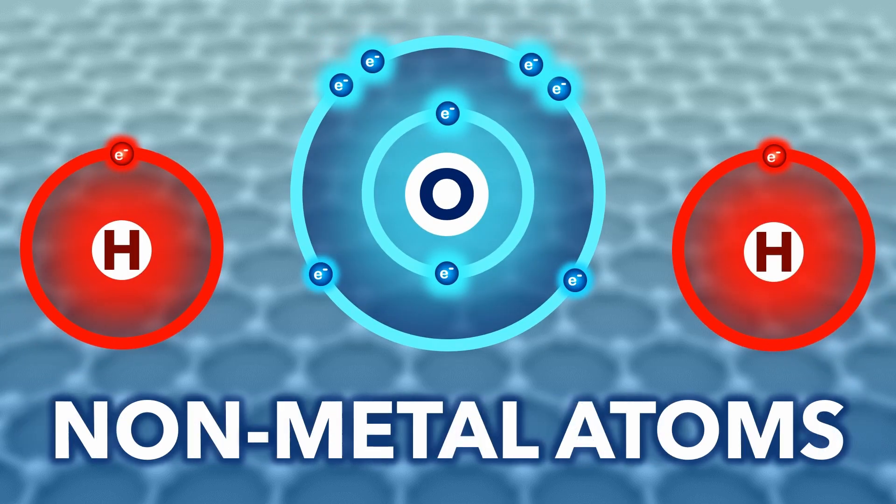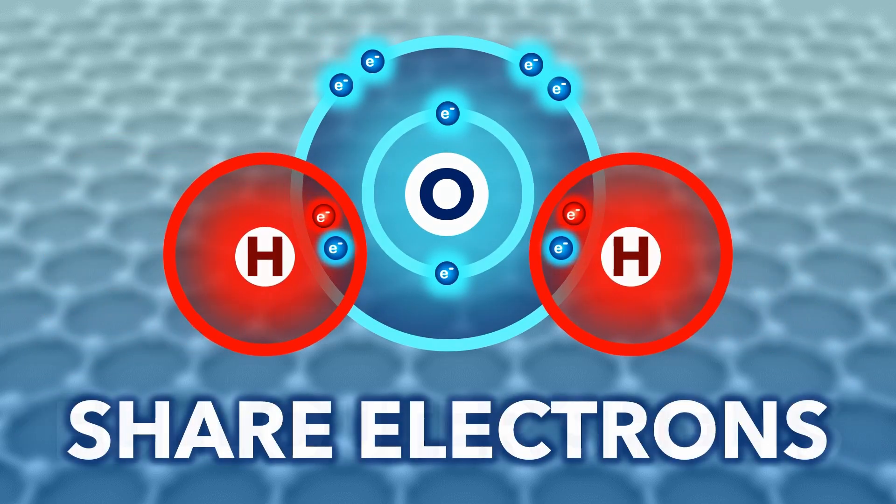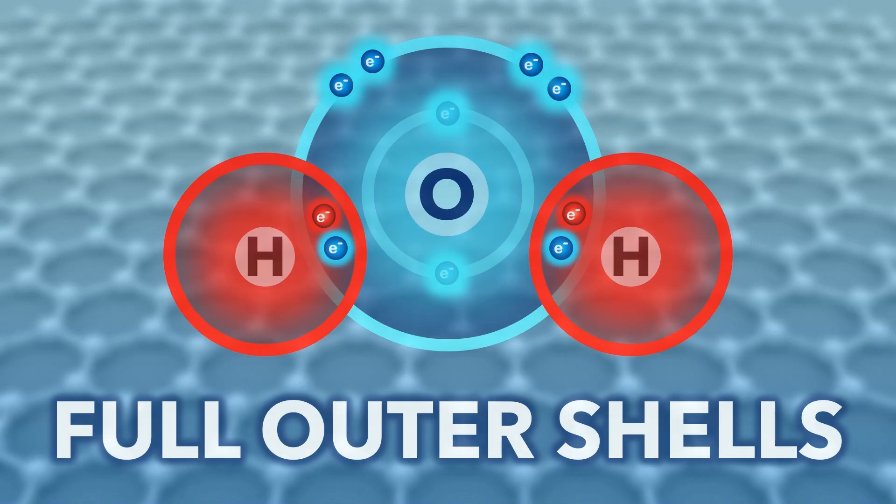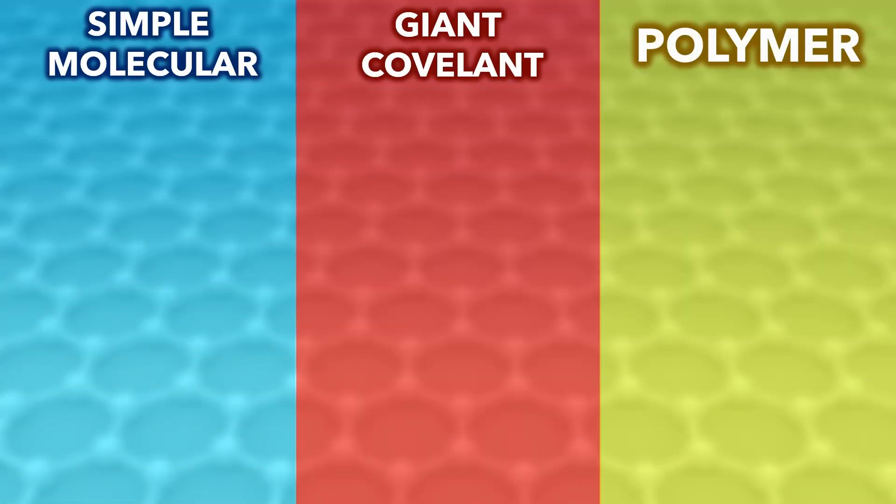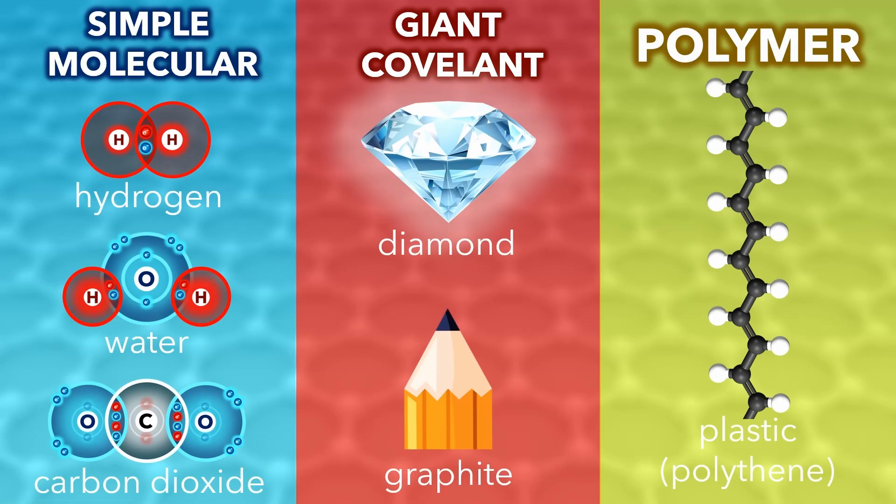Covalent bonding is when non-metal atoms share electrons to get a full outer shell. This video covers the three types of covalent substance with examples and properties of each.